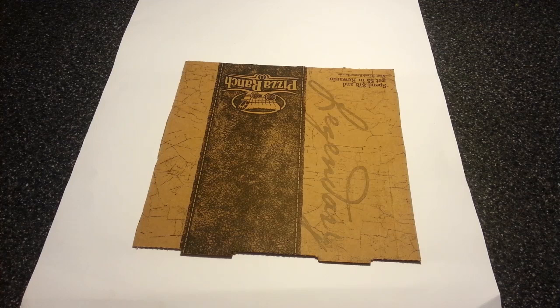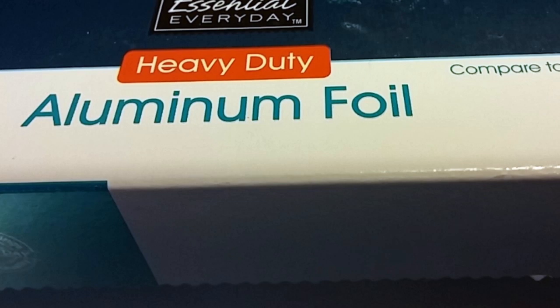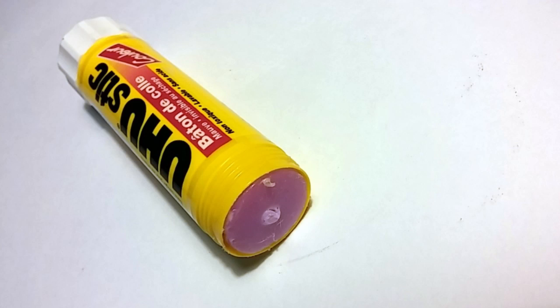The first thing you're going to need is a piece of cardboard. I'm using the part of a pizza box. Also aluminum foil, heavy-duty is easier to work with and less likely to tear.